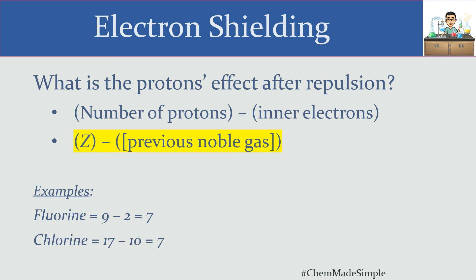If we continue down the list of halogens and look at chlorine, chlorine has 17 protons but also more inner core electrons. So the attractive effect of the chlorine nucleus — in terms of protons minus inner core electrons — is very much the same as fluorine's. However, chlorine's effect on its outer electrons is not quite the same as fluorine's because of the distance factor we discussed earlier. In terms of just protons and inner core electrons, both fluorine and chlorine attract electrons pretty well, and that's the reason they're both electronegative.